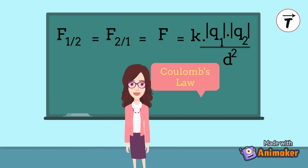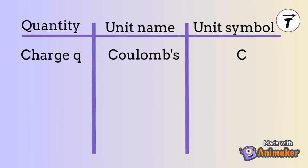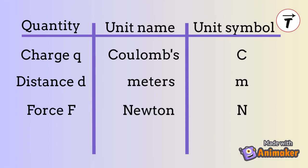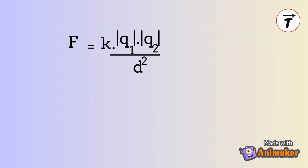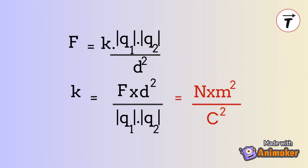Now I want you to make a table showing the SI unit of each quantity in Coulomb's law. The charge q in Coulombs, the distance d in meters, and the force f in Newtons. The SI unit of the constant k must be derived from the other units. Rearranging Coulomb's law we get k equals f times d squared divided by the product of q1 and q2. So k is expressed in Newtons times meters squared over Coulomb's squared.